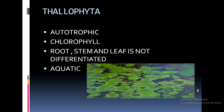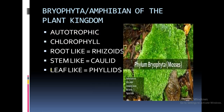Thallophyta: the term 'thallus' means a structure in which you cannot differentiate its different parts, and 'phyta' means plants. Thallophytes are autotrophic — they contain chlorophyll and prepare their own food by photosynthesis. The root, stem, and leaf are not completely differentiated, and these plants are found in water, so they are completely aquatic.